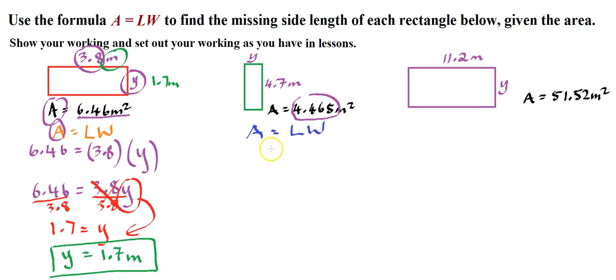And we are given the area, so let's use that. It's not A anymore. We know what A is. 4.465 equals, what's the length? Let's take it as this one, 4.7, because it looks the longest. And what's the width? We're not given the width. That's an unknown. That's a variable.